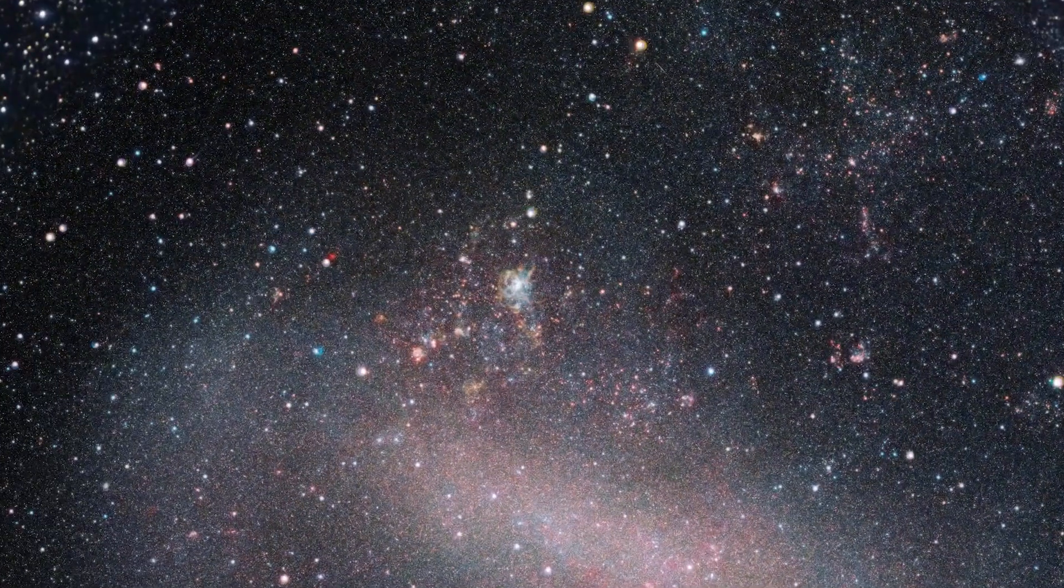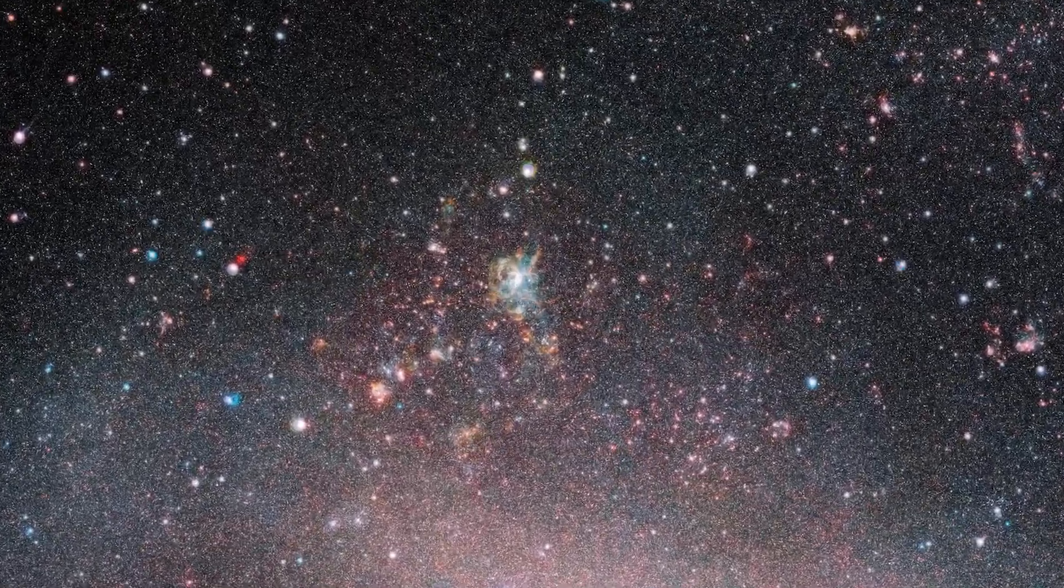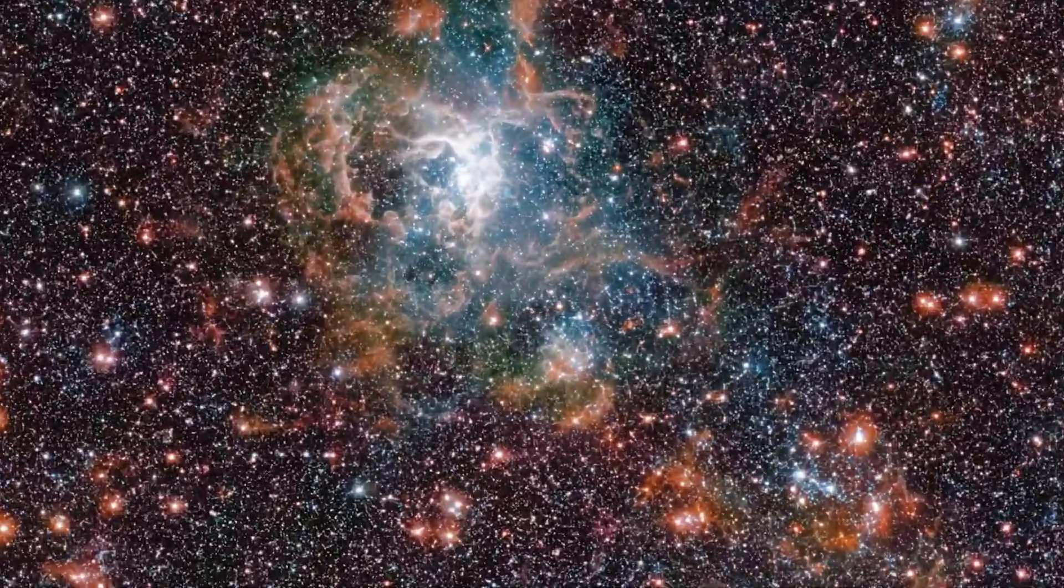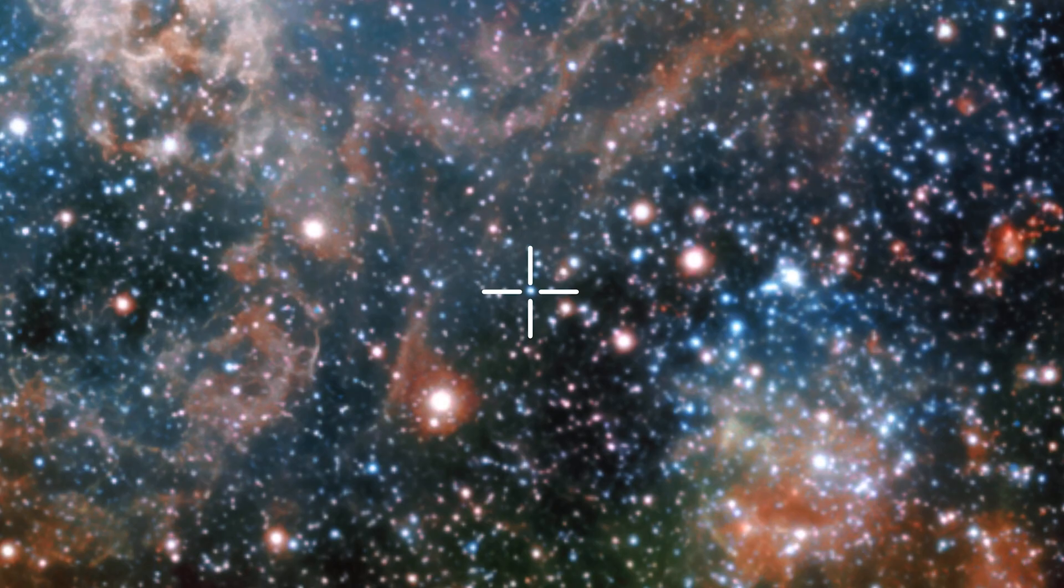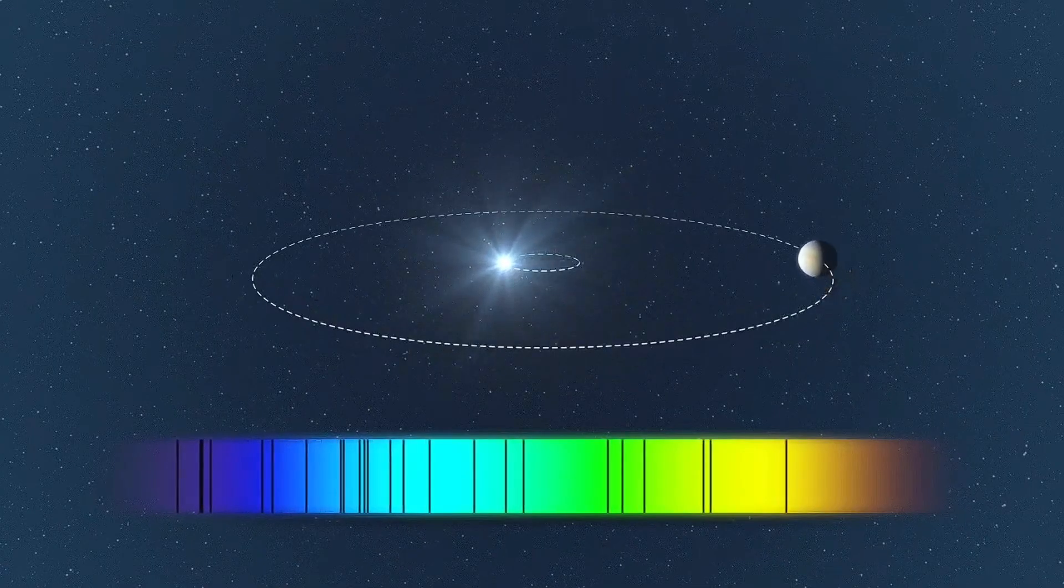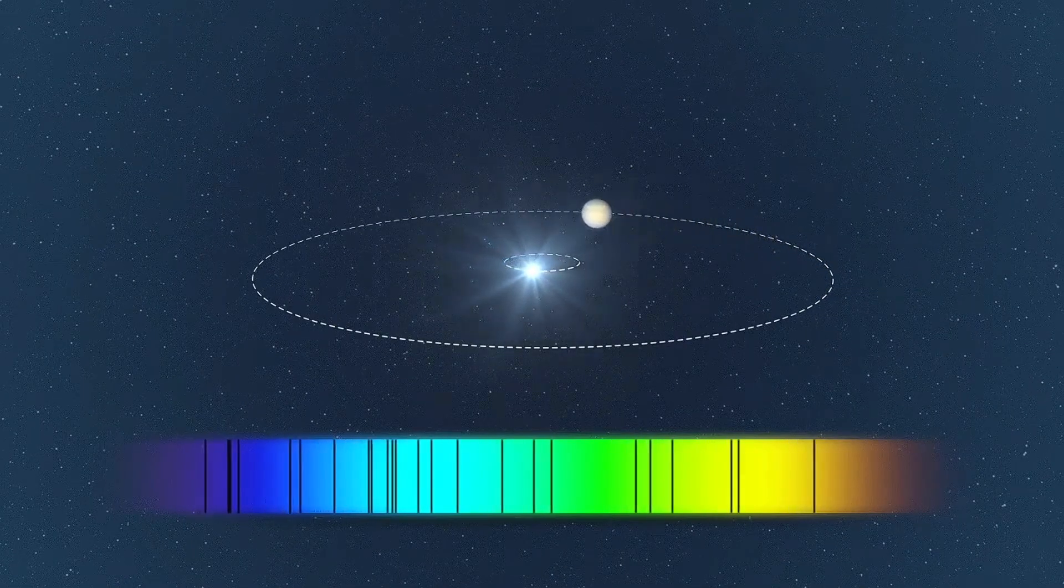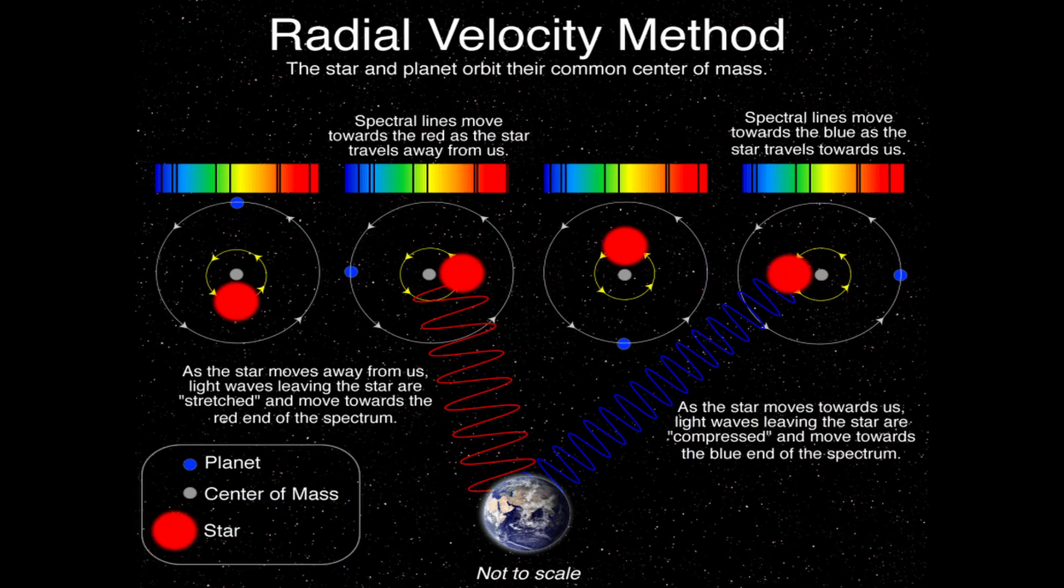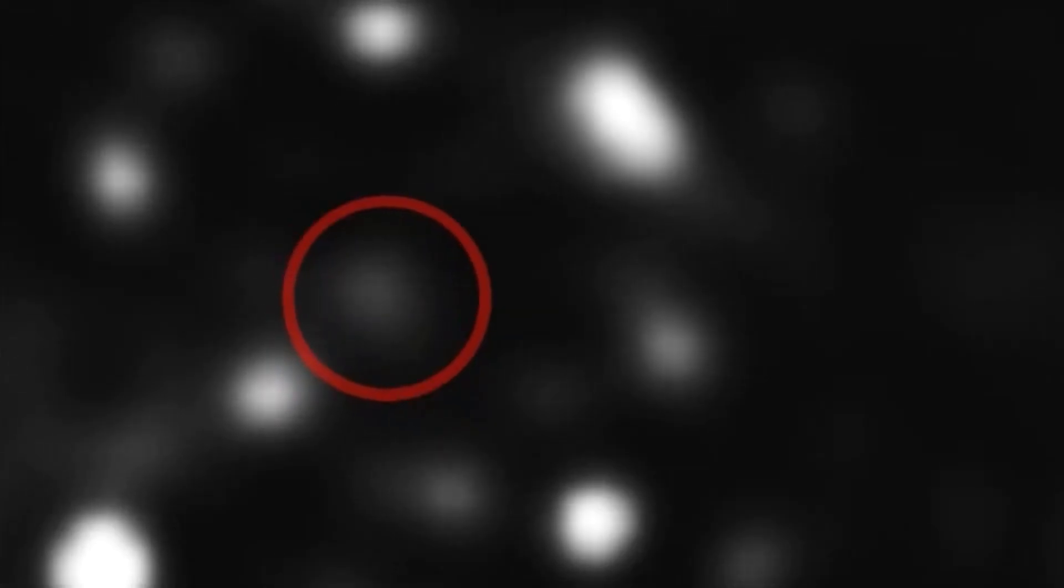What makes VFTS 243 particularly fascinating is that researchers using a technique similar to the radial velocity method typically employed to find planets, observed significant red shifts and blue shifts in the star's light. These shifts indicated that something massive and invisible was orbiting the star.